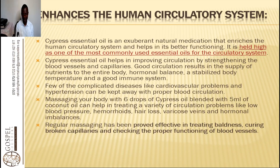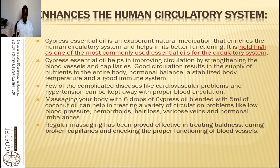Massaging your body with six drops of cypress oil blended with five milliliters of coconut oil can help in treating a variety of circulatory problems like low blood pressure, hemorrhoids, hair loss, varicose veins, and hormonal imbalances. Regular massaging has been proven effective in treating baldness, curing broken capillaries, and ensuring proper functioning of the blood vessels. This oil helps with high blood pressure, hormonal balancing, and varicose veins.